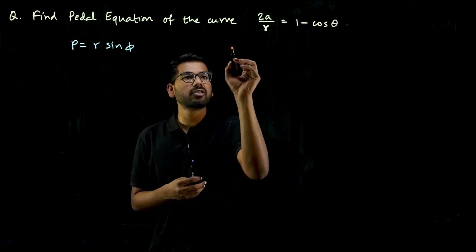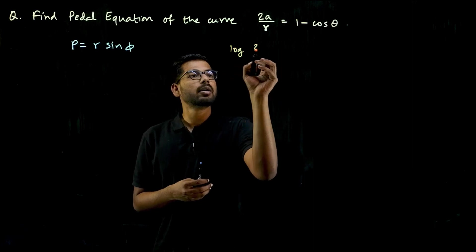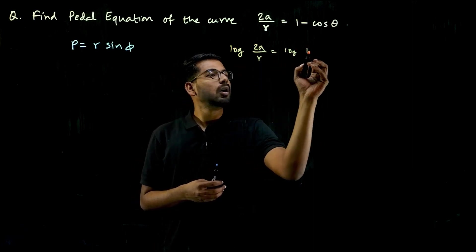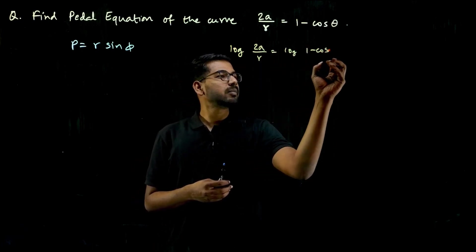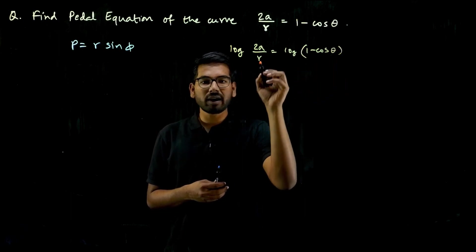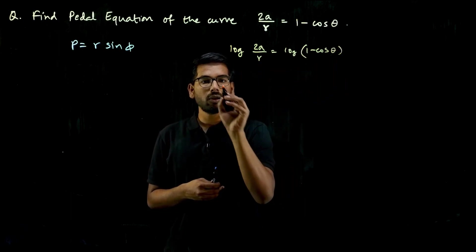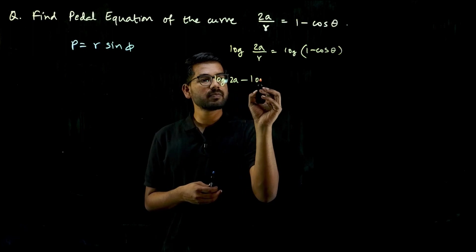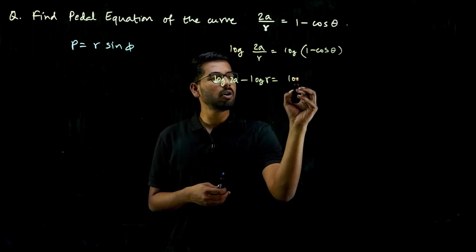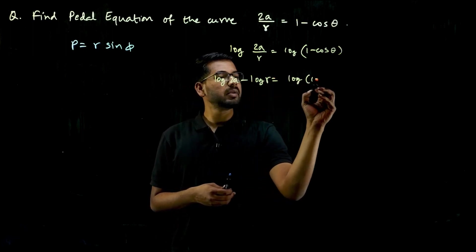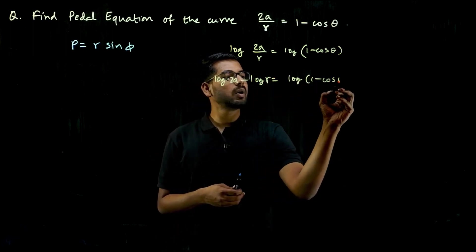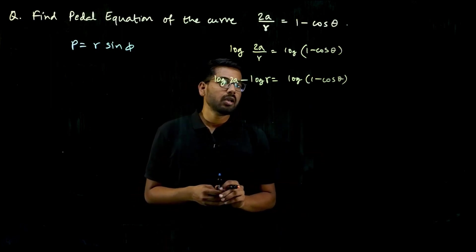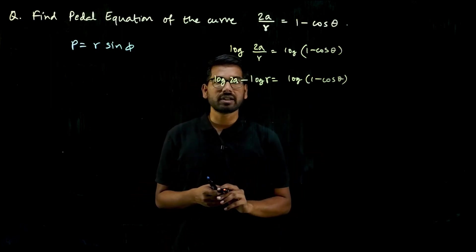Taking log on both sides gives log(2a/r) = log(1 - cos θ). Using log(a/b) = log a - log b, we get log 2a - log r = log(1 - cos θ). After this, we need to differentiate.